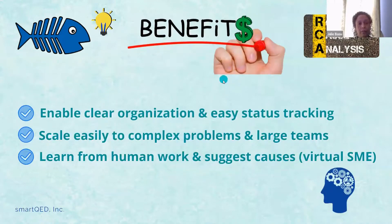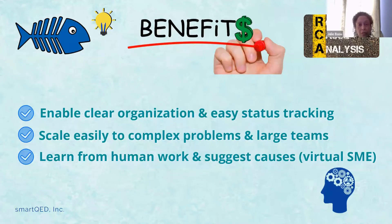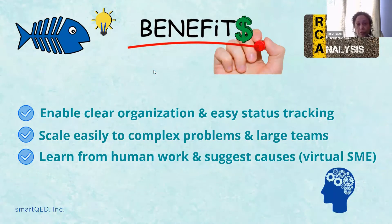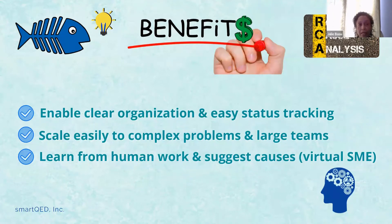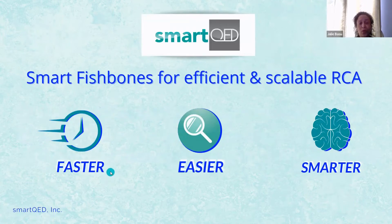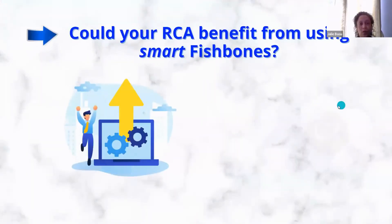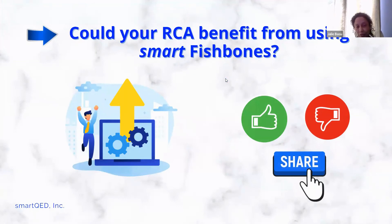The benefits should hopefully be clear by now. Our goals were to make RCA more efficient and more scalable. We make it more efficient by enabling clear organization and easy status tracking, especially in large teams — the color-coded status means you don't have to read each cause and its disposition individually. It scales easily to complex problems and large teams. The smart fish bone is collaborative — multiple people can update at the same time. Last but not least, it acts as a virtual subject matter expert, always learning from human work, understanding symptoms and their association to causes, and suggesting causes. Smart fish bones will hopefully make your work faster, easier, and smarter.